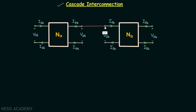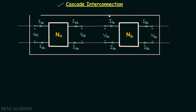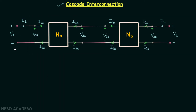We will join these two terminals and also these two terminals. For better understanding I will extend the remaining four terminals, and you can see that now we have one larger two-port network. The input voltage of the overall network is V1, the output voltage is V2, and you can see that voltage V1 is equal to voltage V1a.